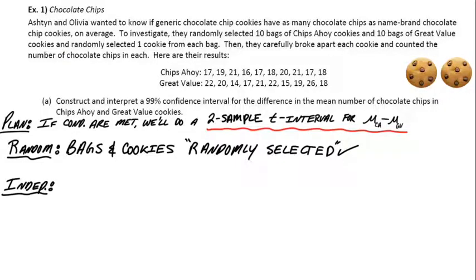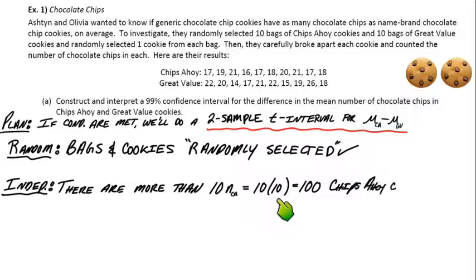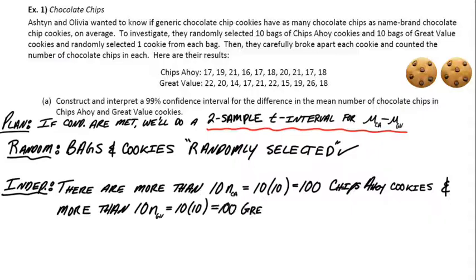The independence condition, even if they randomly selected the cookies, technically that's a finite population, right? There's a finite number of cookies, so their sample size was really small. We could just say there are definitely more than 10 times the sample size, which is 100 Chips Ahoy cookies, and there's also more than 100 Great Value cookies. I mean, who can just eat 10 cookies at once, right? So if that's the case, the 10% condition is definitely met.